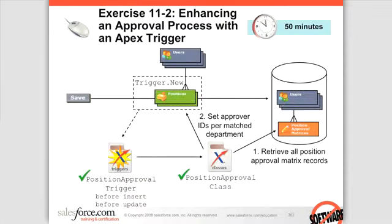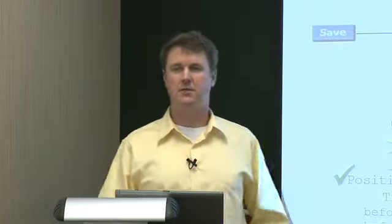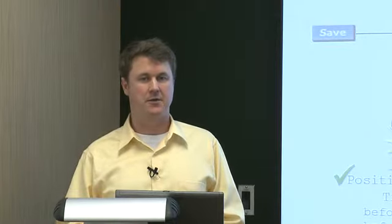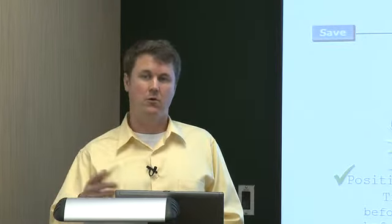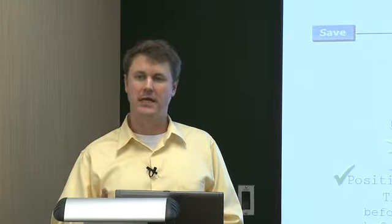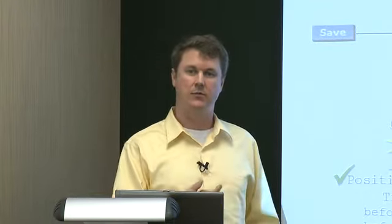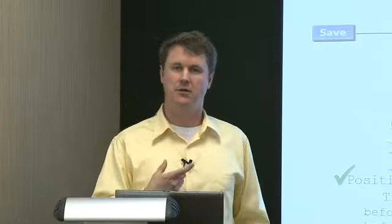In the next exercise, 11-2, one of the things we're going to implement is a dynamic approval process. In an approval process, for each of the steps you can either explicitly reference a particular user or reference a related user. The related user is on the record being submitted for approval — you can have fields which do a lookup to users and populate those with the approver. When we run our approval process, the data on the current record being submitted determines who the approvers are.